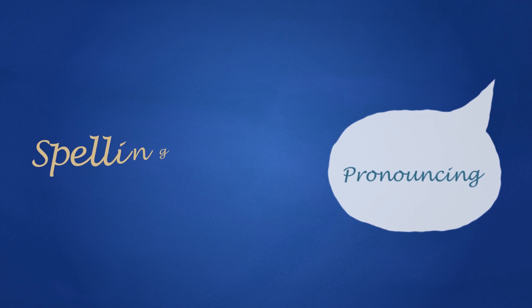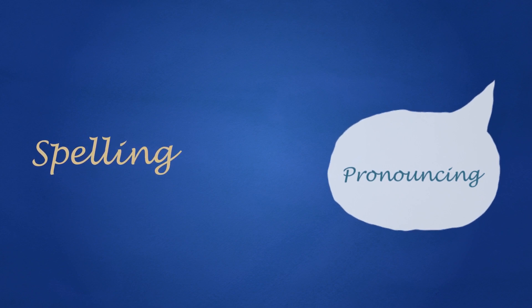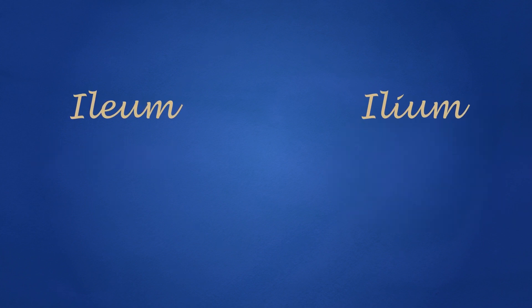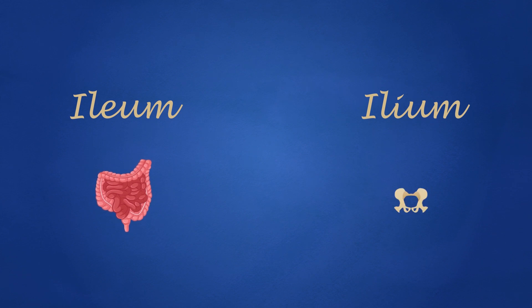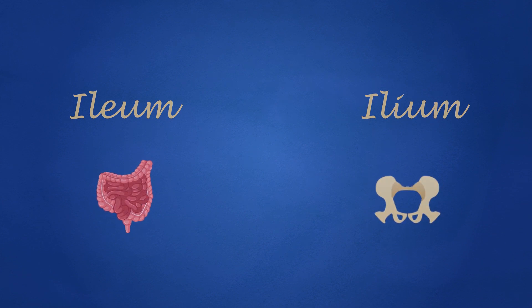Correct pronunciation and spelling are crucial because some terms sound the same but are spelled differently and refer to different things. For example, ileum and ilium are pronounced alike, but the first term is part of the intestinal tract and the second one is a pelvic bone.